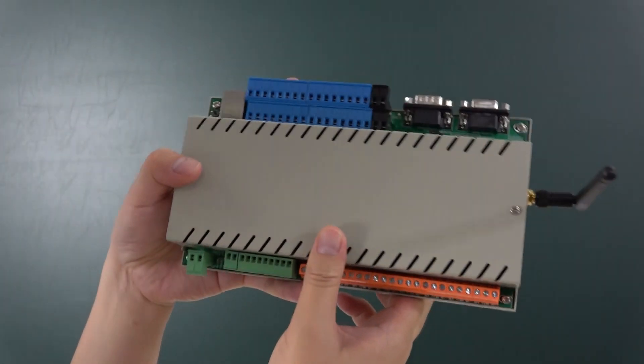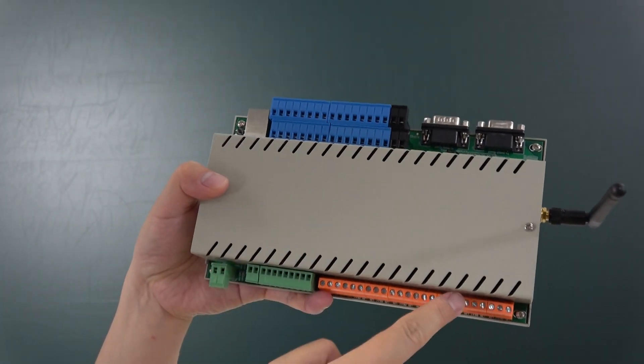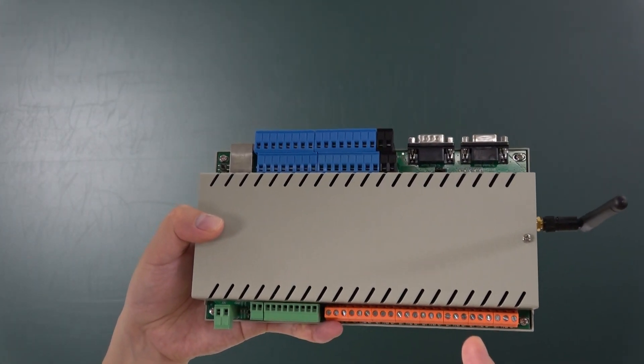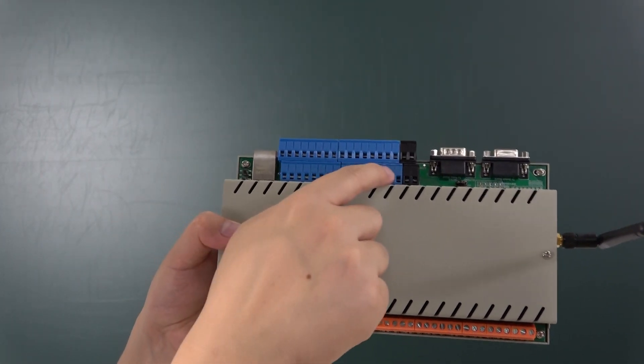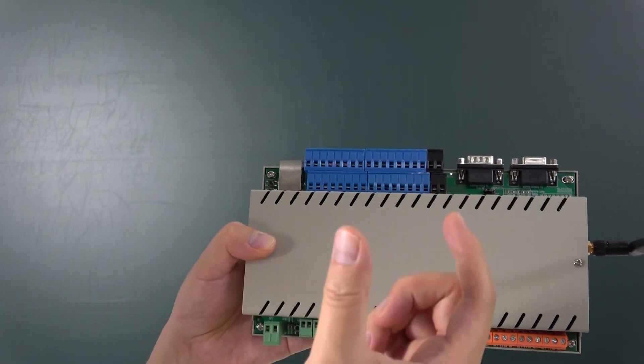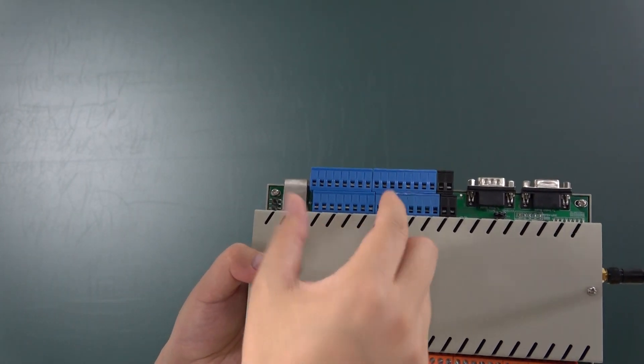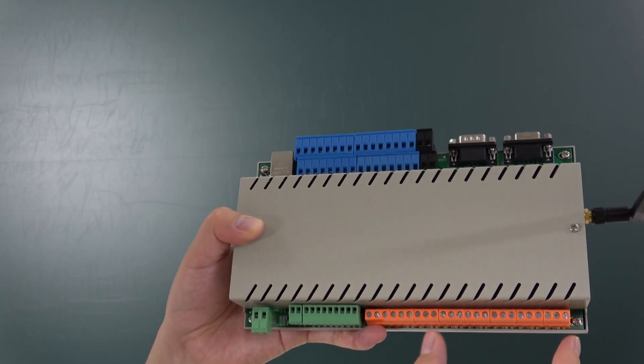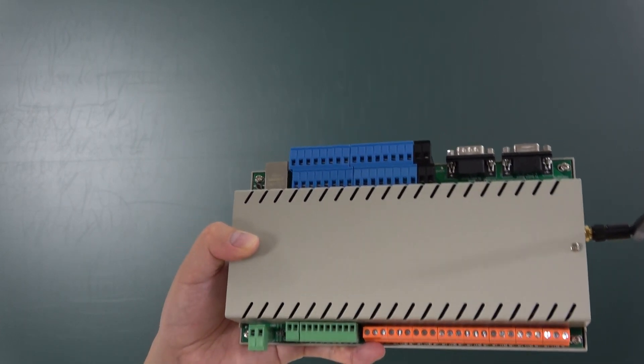If you want to use some input to trigger the output, you just set the PC software. You can set the value, what's the temperature for the sensor, what's the water level, what is the PIR sensor, motion sensor, many sensors. You can control the output, the orange point, control this relay output directly.